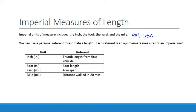So background of imperial measurements is that people used to measure things based on common objects, such as parts of their body. You can use a personal referent to estimate a length. Each referent is an approximate measure for an imperial unit. It's really a reference point.